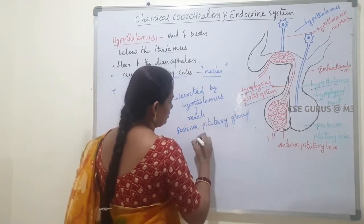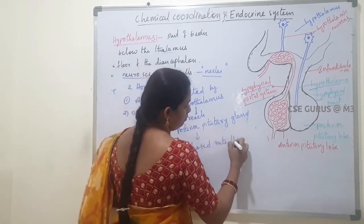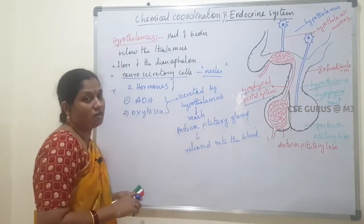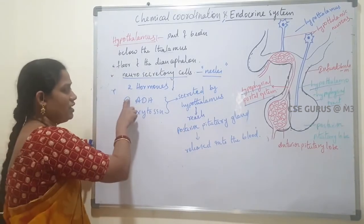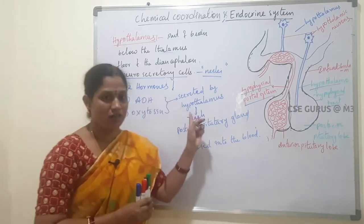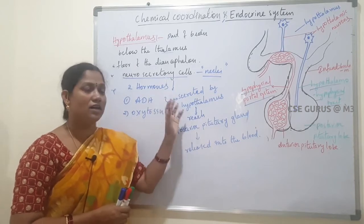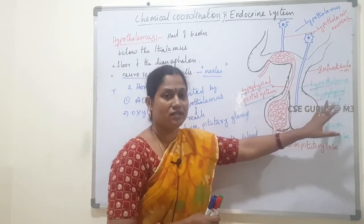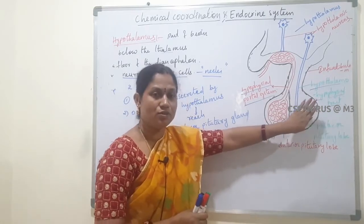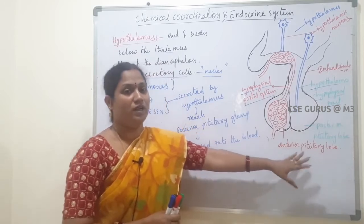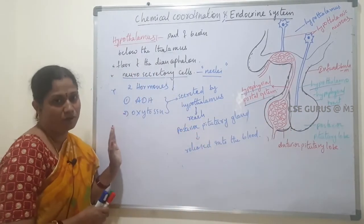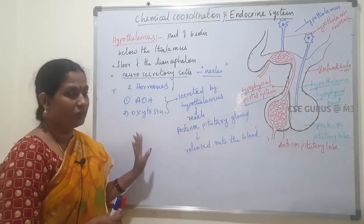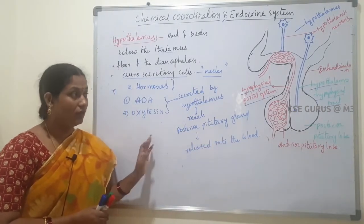ADH and oxytocin are released into the blood from the posterior pituitary gland. So although they are secreted by the hypothalamus, they are released by the posterior pituitary lobe. These are actually hypothalamic hormones; they first reach the posterior lobe through the hypothalamo-hypophysial tract, are stored there, and then released into the blood from the posterior lobe.